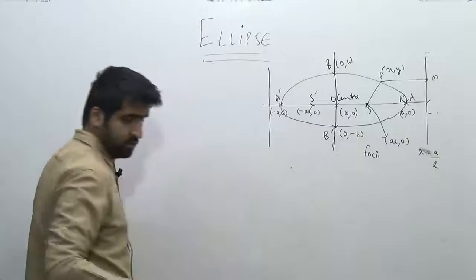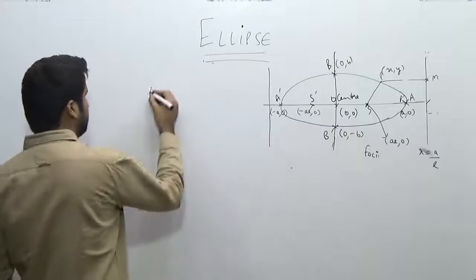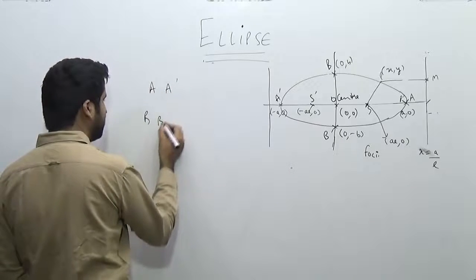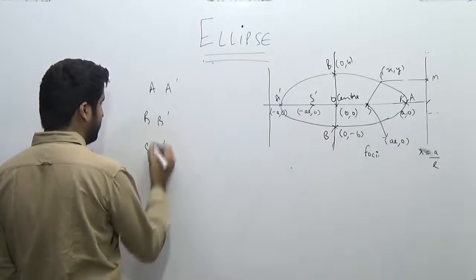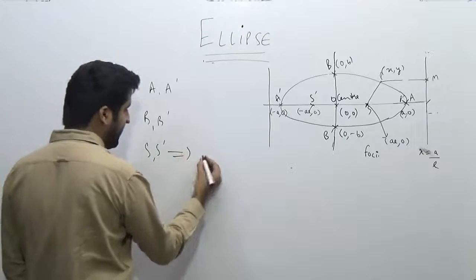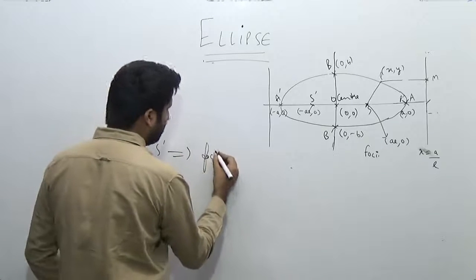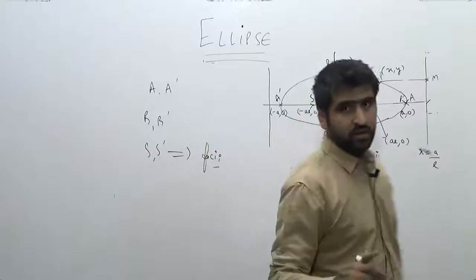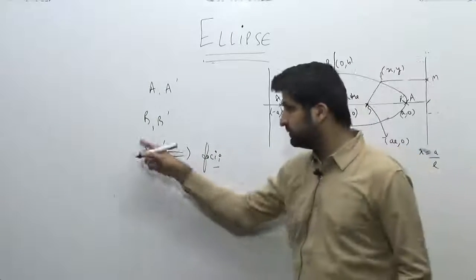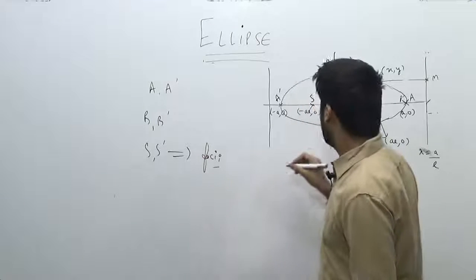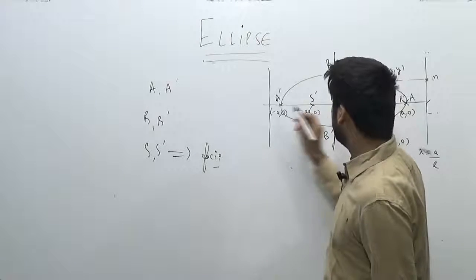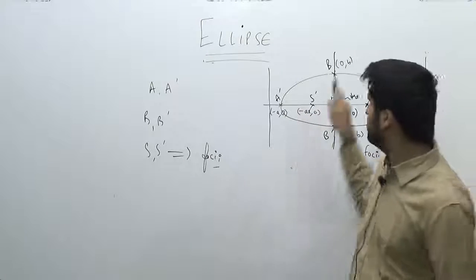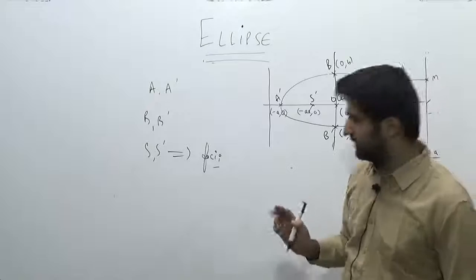We have six points: the first two are A and A dash, then we have B and B dash, and then we have S and S dash. S and S dash are the two foci of this ellipse. A and A dash are the two endpoints of the major axis, and similarly B and B dash are the endpoints of the minor axis.